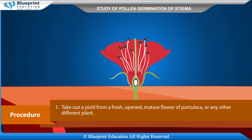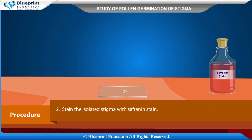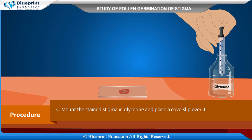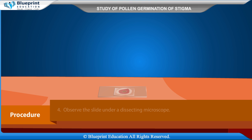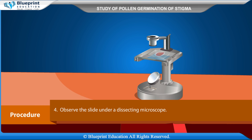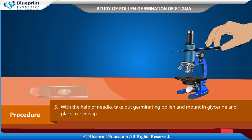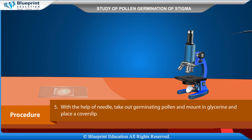Procedure: Take out a pistil from a fresh, opened, mature flower of Portulaca or any other suitable plant. Stain the isolated stigma with safranin stain, mount the stained stigma in glycerine, and place a coverslip over it. Observe the slide under a dissecting microscope. With the help of a needle, take out a germinating pollen, mount it in glycerine, and place a coverslip.